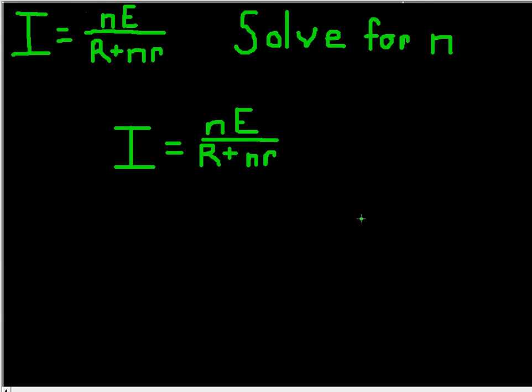The first thing that we should do is get rid of this denominator. And the way we can go about this is by multiplying by the reciprocal. So we can actually multiply this by R plus nR.